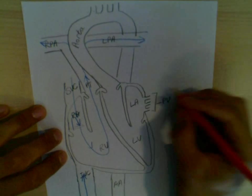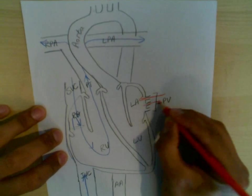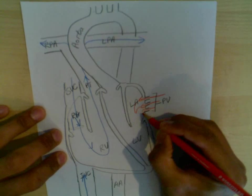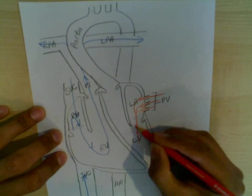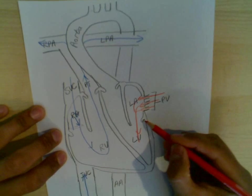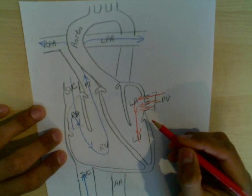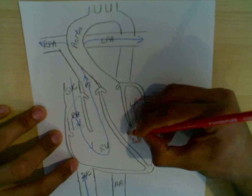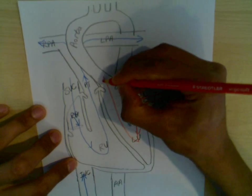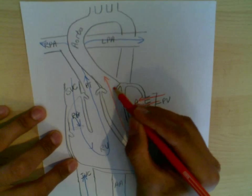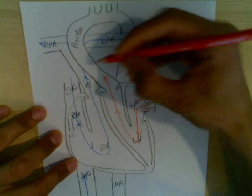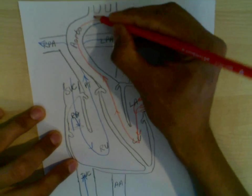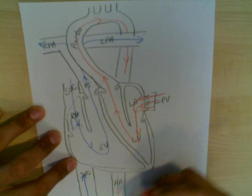They return as oxygenated blood via the pulmonary veins into the left atrium. They pass again through another atrioventricular valve, this time known as the bicuspid or mitral valve, into the left ventricle. And they then pass from the left ventricle into the aorta via the aortic, through the aortic valve. Go around the aortic arch. And this is how the body is supplied with oxygenated blood.